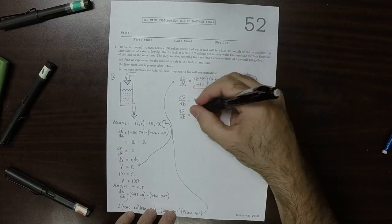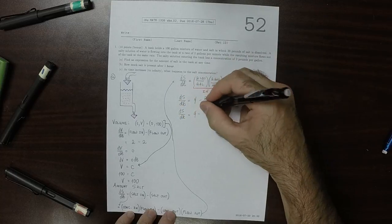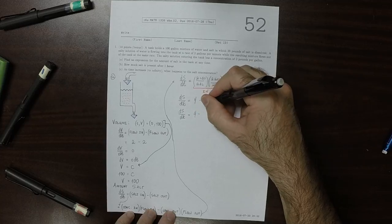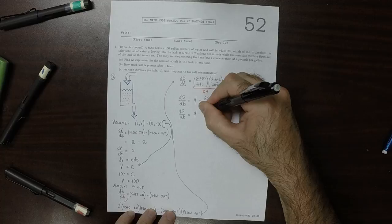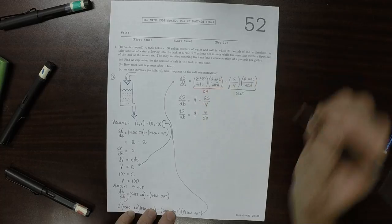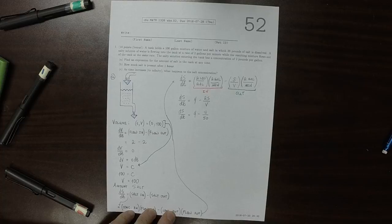So dS/dt is 4 minus, so 2 over 100 is 1/50, so S over 50. All right. So this is the differential equation we need to solve.